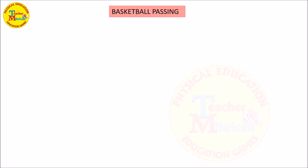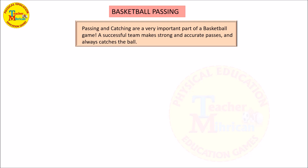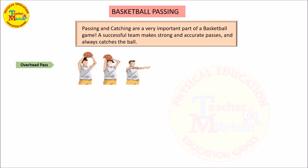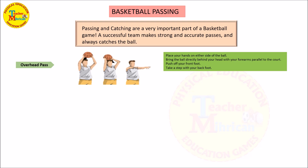Basketball passing. Passing and catching are a very important part of a basketball game. A successful team makes strong and accurate passes and always catches the ball. Overhead pass: place your hands on either side of the ball, bring the ball directly behind your head with your forearms parallel to the court, push off your front foot, take a step with your back foot, and release the ball.